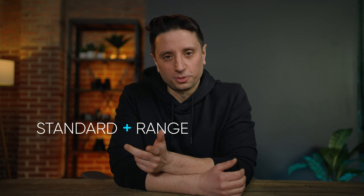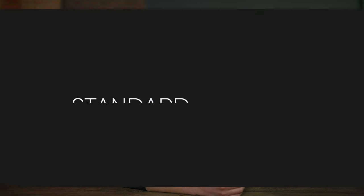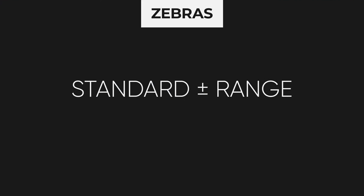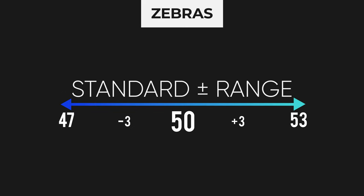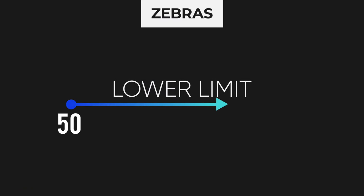If you're using a Sony camera, you'll see two options for zebras: standard plus range and lower limit. Standard plus range means whatever exposure number you set — say 50 with a range of 3 — the only zebras you see are parts of the image exposed between 47 and 53. Lower limit means whatever number you set, say 50, zebras appear on anything 50 and above; nothing darker will show zebras.